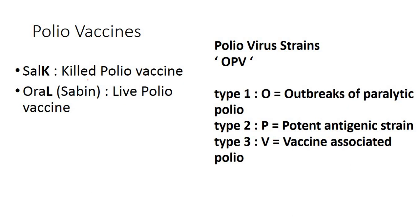Another mnemonic using the fourth letter helps distinguish live and killed polio vaccines. Remember SOCK and ORAL: O (oral) = Live polio vaccine by Sabin; K (sock) = Killed polio vaccine. So oral live polio vaccine is by Sabin, and killed polio vaccine is by Salk — remember it as SOCK.